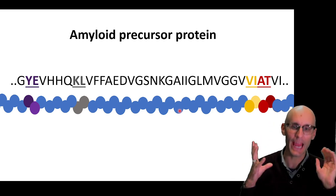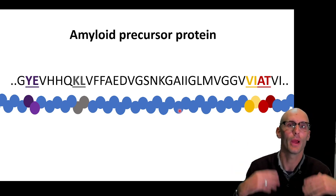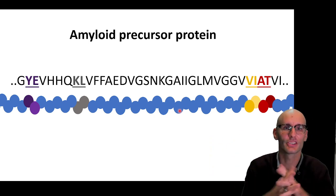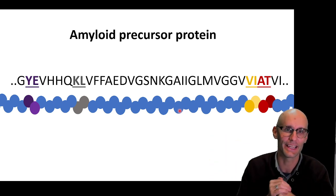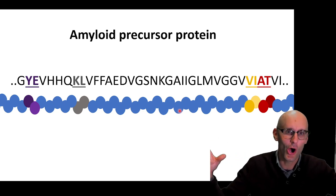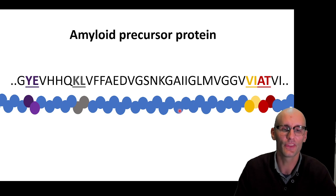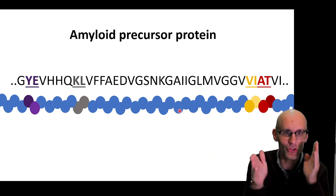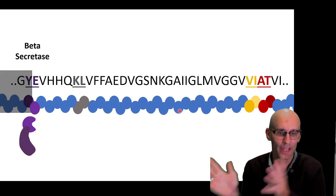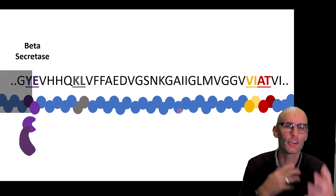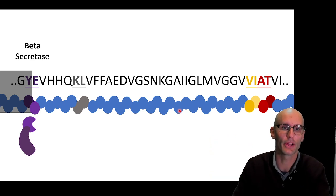Okay so let's zoom in. This is the amyloid precursor protein — I've got a string of letters along the top. Each of those letters corresponds to amino acids, so proteins are just long strings of amino acids. This is the long string of amino acids and we're looking at the crucial zones where those enzymes actually cleave. So first we have beta secretase — it cleaves over here — it's not important to remember the specific amino acids, just important to visualize what's going on at the protein.